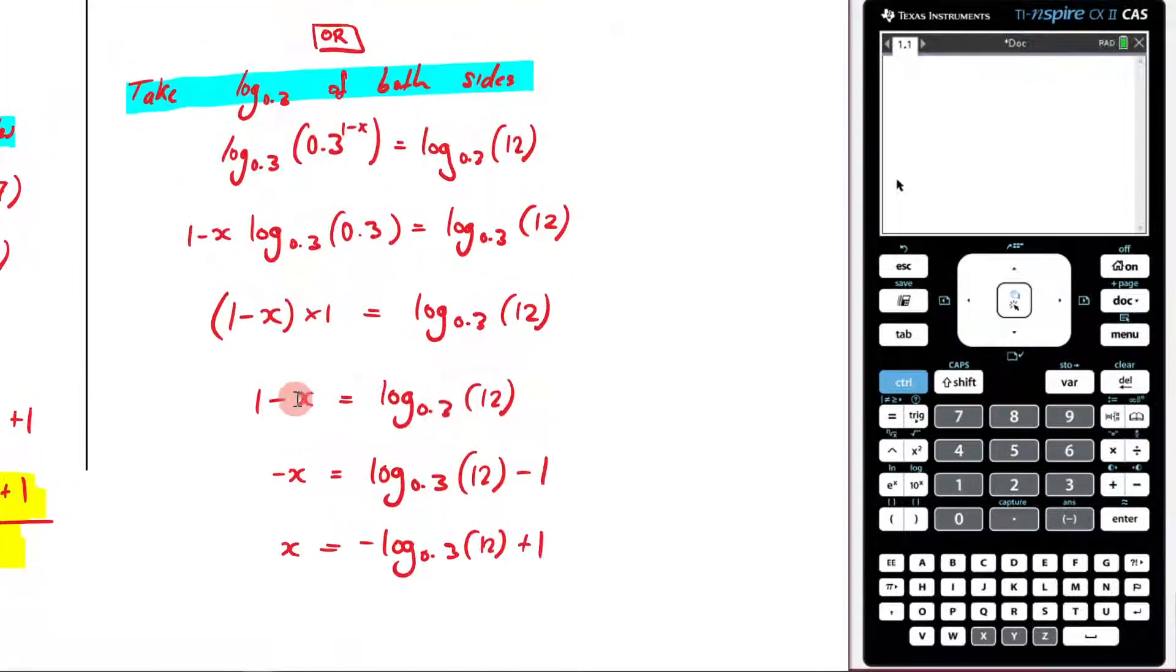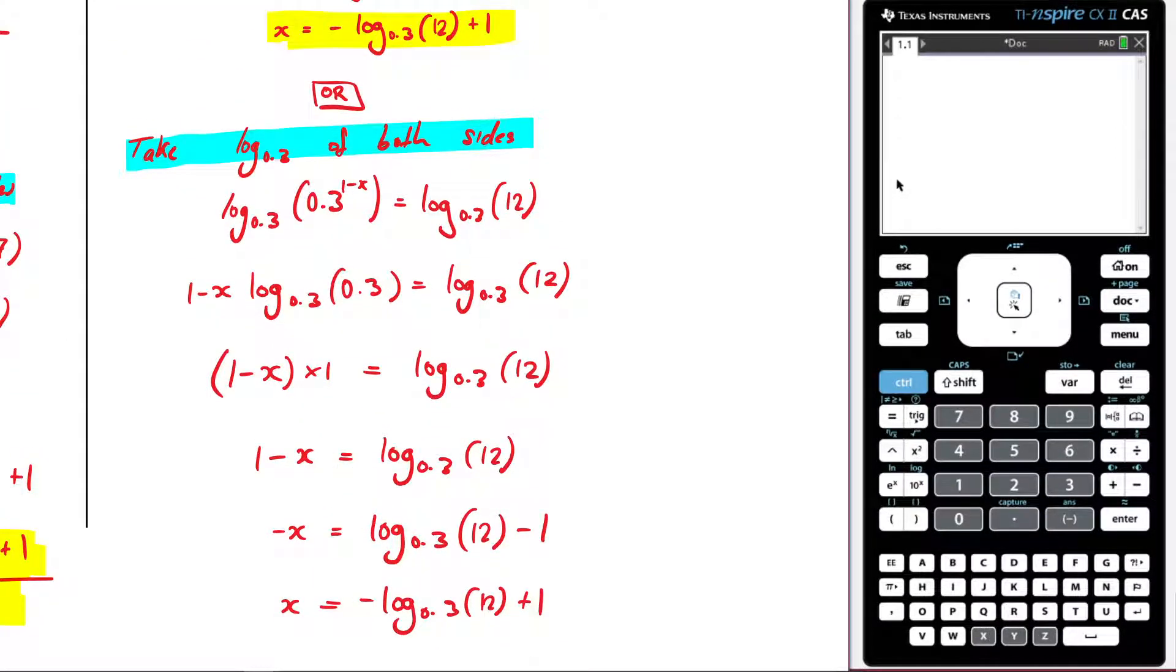And hopefully that's what we got up here. Negative log base 0.3 of 12 plus 1, it is. So that is the same as that.